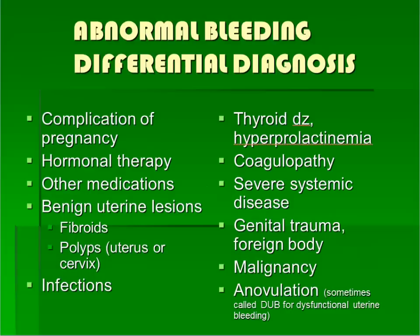This slide includes a differential diagnosis for abnormal bleeding. One of the most common etiologies is ovulatory dysfunction, also referred to as anovulation or dysfunctional uterine bleeding. We will talk about this more in depth.